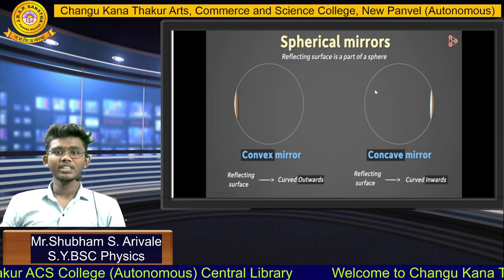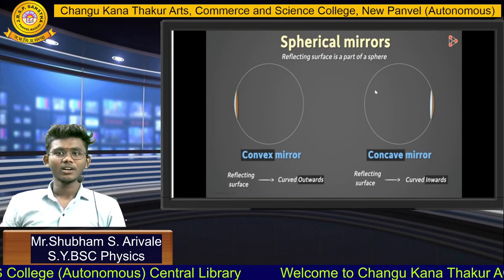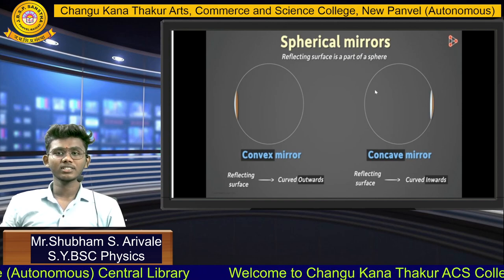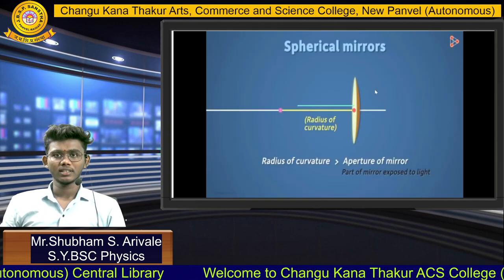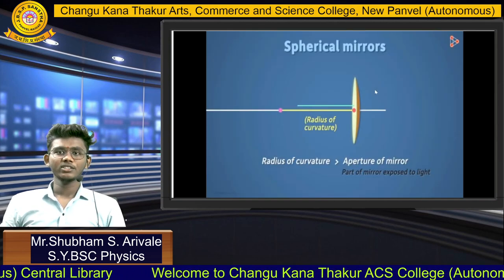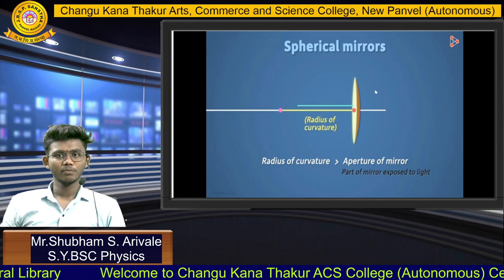Convex Mirror has a reflecting surface that curves outward. Concave Mirror has a reflecting surface that curves inward. Spherical Mirror has a radius of curvature greater than the aperture of the mirror.